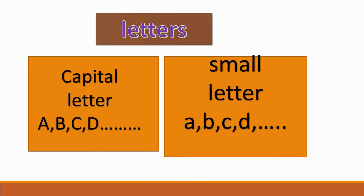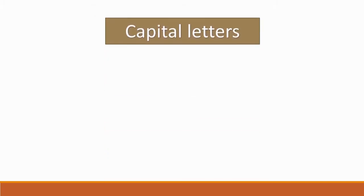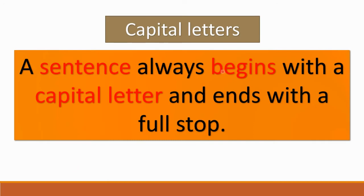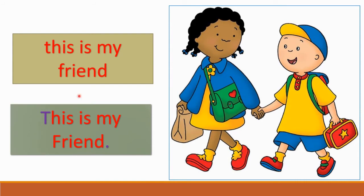Let us discuss the use of capital letters. First rule: a sentence always begins with a capital letter and ends with a full stop. For example, 'This is my friend.' Here, T is the initial letter of the first word in the sentence, and it is marked as a capital letter. And it ends with a full stop.